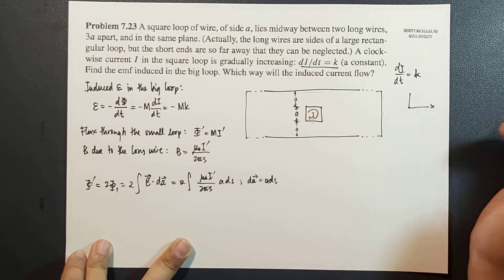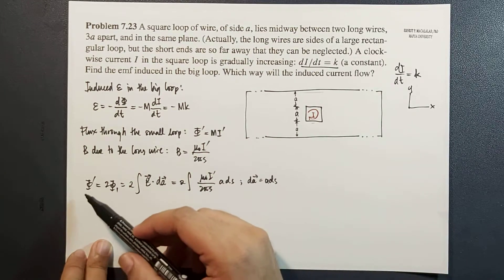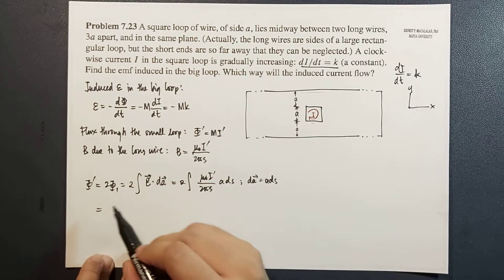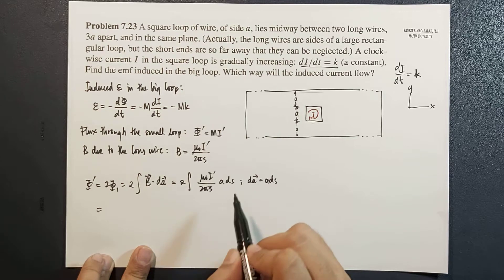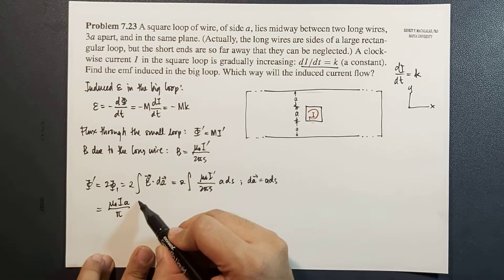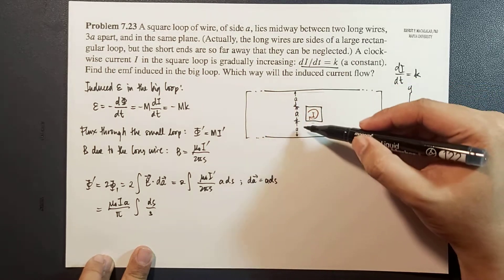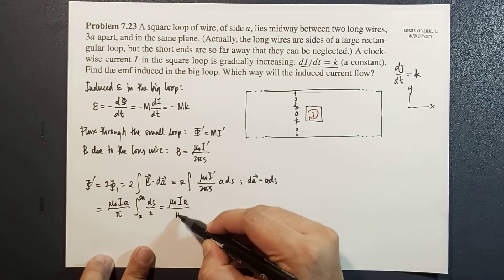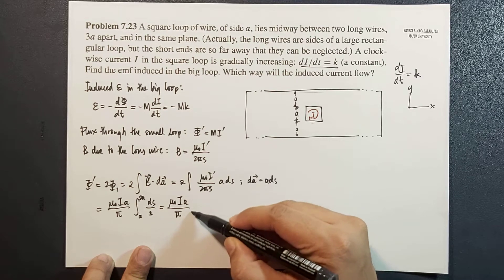For example, if this is x, y, that's positive z or negative z, so that's z hat. We're just looking at the flux. Now, solving this, we now have 2 will cancel. Mu naught and I prime are constant, pi is also a constant as well as A. So this is now mu naught I A over pi times the integral of dS over S. That's from A to 2A for this side, which is the same as from A to 2A from this side. So this is equal to mu naught I A over pi times ln 2A over A, so that's ln 2.